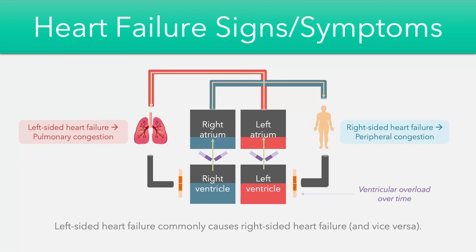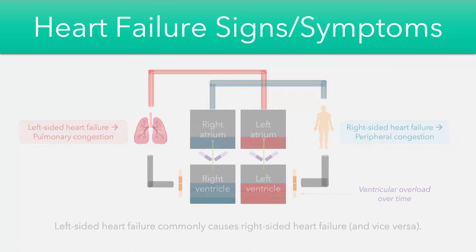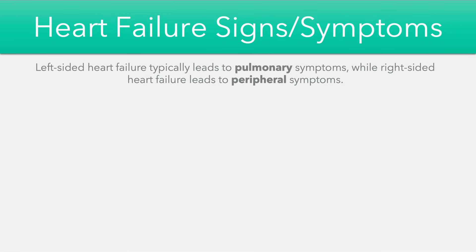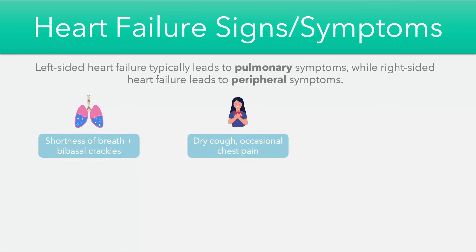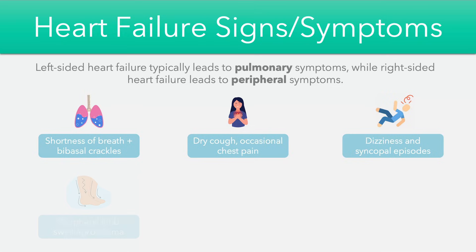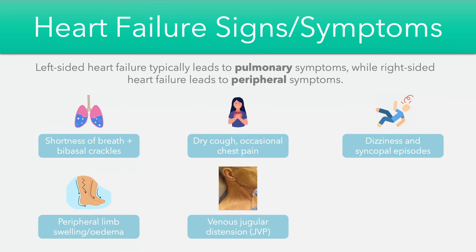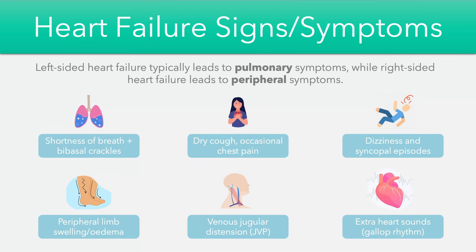Because the heart is a closed system, most patients present with a mix of both right-sided and left-sided heart failure signs — a mixture of pulmonary and peripheral symptoms. For example, there might be shortness of breath and bibasal crackles due to fluid buildup in the lungs, accompanied by dry cough and occasional chest pain. Some patients may experience dizziness and syncopal episodes due to poor cardiac output. Peripheral symptoms include peripheral edema, leg swelling, jugular venous distension, and a raised JVP. Extra third and fourth heart sounds may also be heard on auscultation.